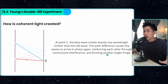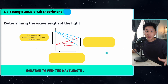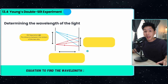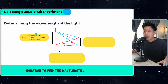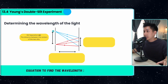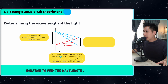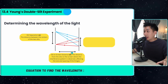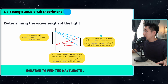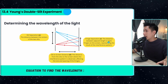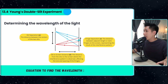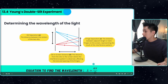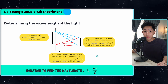This pattern continues on and on, producing what we see on the screen. There are a few quantities we calculate to find the wavelength of light: the slit separation, which is the distance between the centers of two slits; the slit-to-screen distance; and the fringe separation, the distance between adjacent bright or dark fringes. With all those values, we use the formula to calculate the wavelength of the light.